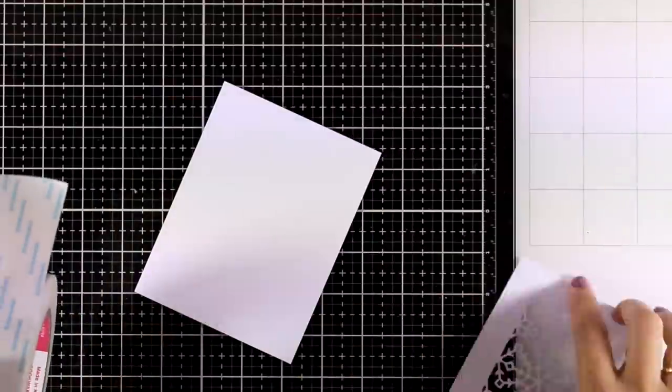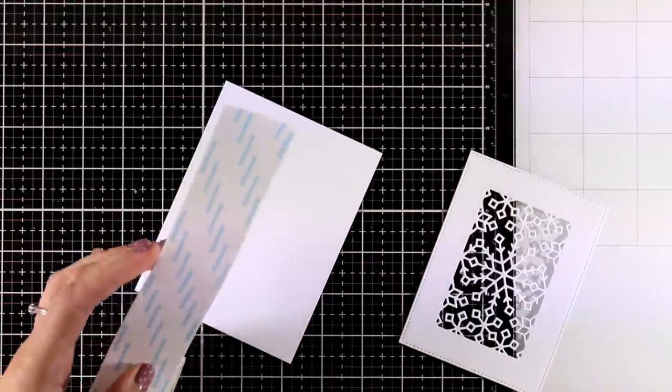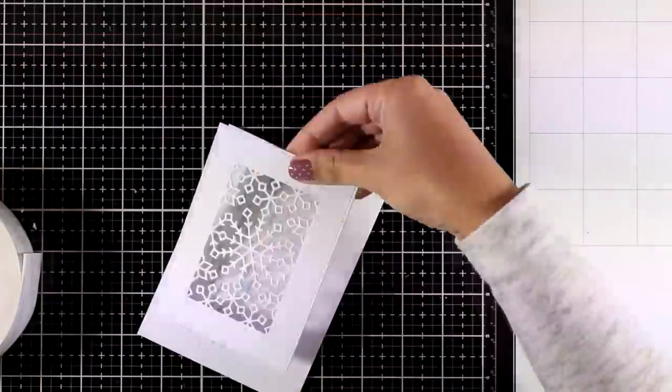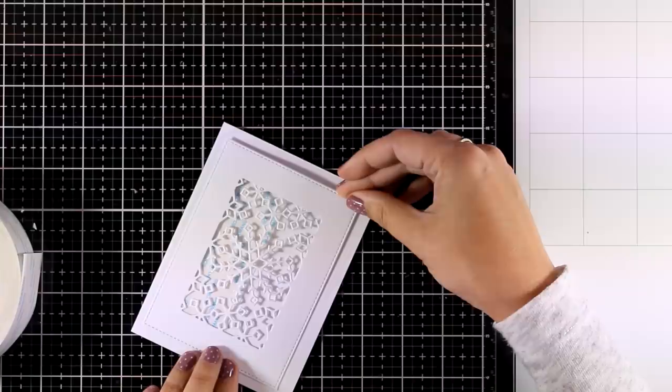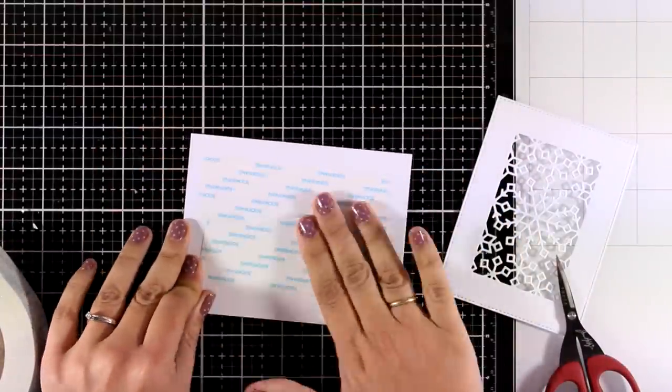So here I end up with a beautiful panel, a window panel, and it could make a great shaker card but for this card I will go just for a window card so I am going to make sure that whatever you see through that window is covered with double-sided tape.